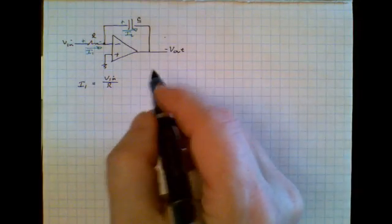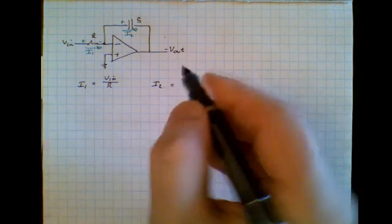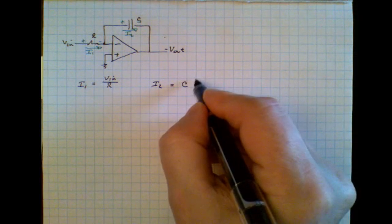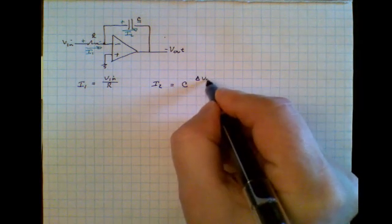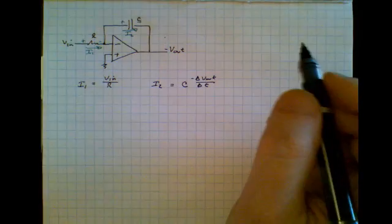I2 on the other hand is a little bit trickier. I2 is equal to the capacitance times the voltage across it divided by the amount of time that voltage is changing.